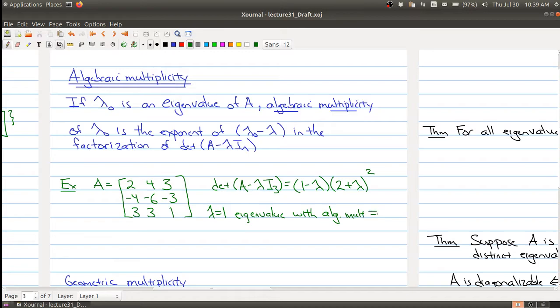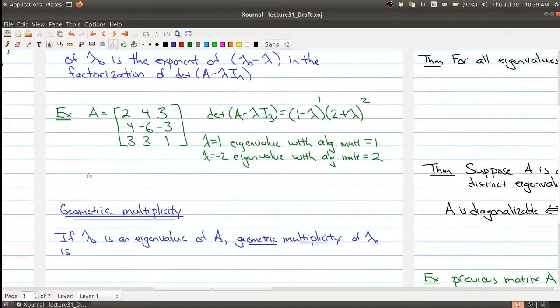So what we have here is that lambda 1 equals 1 is an eigenvalue with algebraic multiplicity equaling to 1, because really you want to think that there's a 1 right there. And then the other eigenvalue is negative 2 and it has algebraic multiplicity equaling to 2 because 2 plus lambda shows up twice in the factorization. So each eigenvalue will have an algebraic multiplicity to it and it's basically just counting the number of times that particular term shows up in the factorization. And as I said before some books call this just simply the multiplicity.